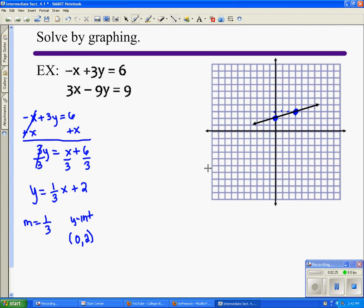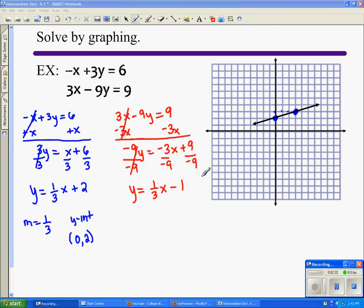Then we're going to take our second equation, 3x minus 9y equals 9. We're going to solve it for y and do the same thing. So when I solve it for y, I get this slope-intercept formula. So now I'm going to name my slope of the red line as one third. My y-intercept is going to be the ordered pair zero, negative one. So I start at zero, negative one, which is here.